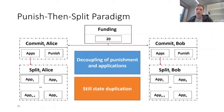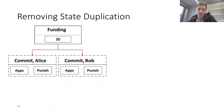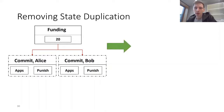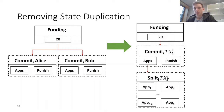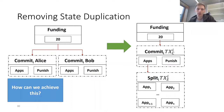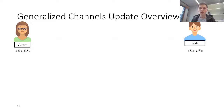We still have state duplication with two distinct commit and split transactions. We would like a transaction design with one funding transaction, one commit transaction, and one split transaction. Our idea to achieve this is to use adapter signatures. I will give a high-level overview of how the update procedure of our generalized channel works, explaining how adapter signatures enable only one commit transaction.